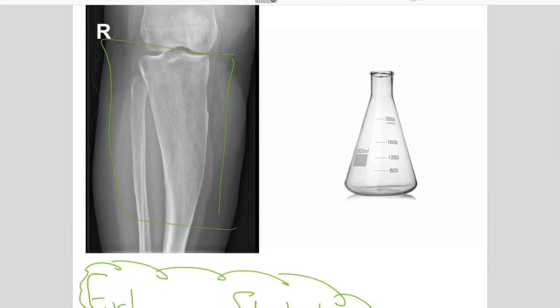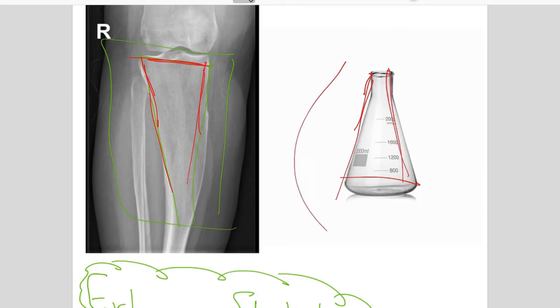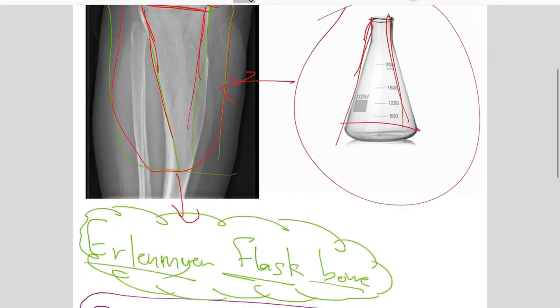This finding in the x-ray is known as the Erlenmeyer flask bone type. The reason they called it Erlenmeyer is because look at how it looks like. It looks like an Erlenmeyer flask, which is this. So this looks like this. So when you find a finding in your x-ray of a bone that looks like this, we call it the Erlenmeyer flask, and this is what's indicative of osteopetrosis.